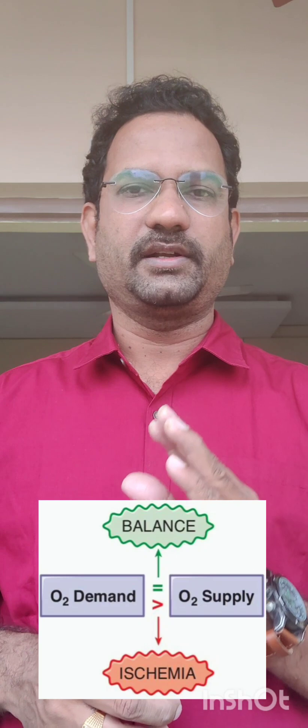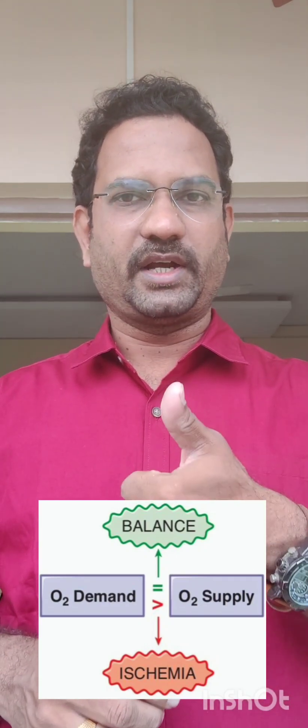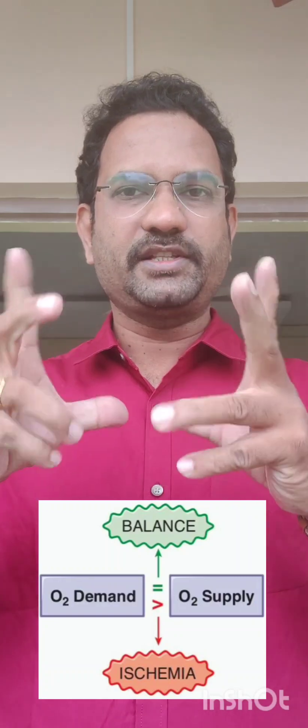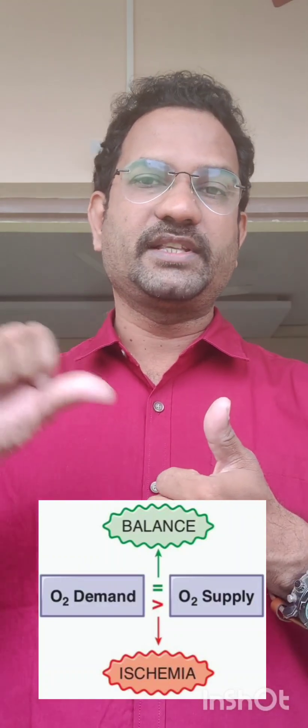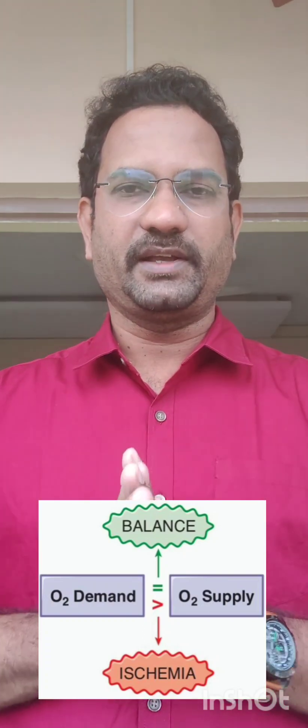What causes this angina pain is that the heart always needs blood supply because blood carries oxygen. Oxygen gives ATP, and using that ATP, heart contractions occur. So there is always an increased demand for oxygen for the heart. When this demand is met with oxygen supply, there is a balance. When oxygen demand is more than oxygen supply, that condition causes ischemia.